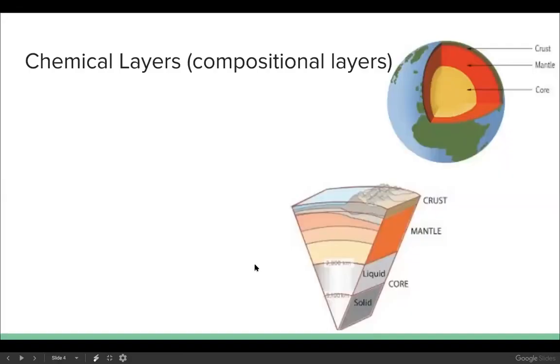The first section of the first page of notes is titled chemical layers. The chemical layers, we can separate the earth into three distinct layers if we only pay attention to what elements they're made of. Those three layers start with the top, the very top layer of the earth is called the crust. This layer is five to seventy kilometers thick.